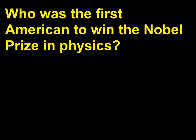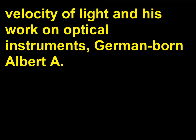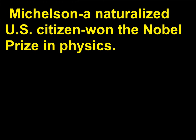Who was the first American to win the Nobel Prize in physics? In 1907, for the development of extremely precise measurements for the velocity of light and his work on optical instruments, German-born Albert A. Michelson, a naturalized U.S. citizen, won the Nobel Prize in physics.